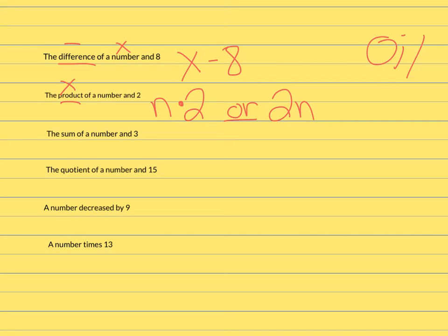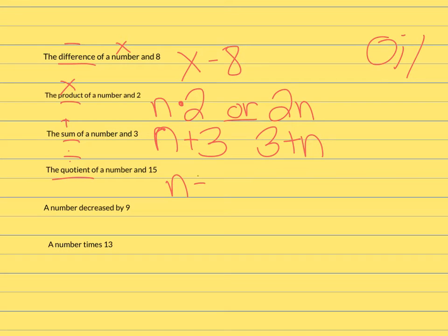The next one is the sum of a number and three. Sum means addition, so n plus three. Or because of the commutative property, you could do three plus n. Quotient means division, and because order matters, you need to keep it in the given order. So it's a number and 15 — that's n divided by 15. You could also write this as n over 15, because the fraction bar means division.